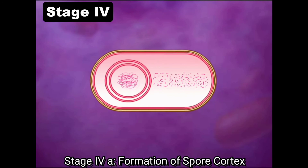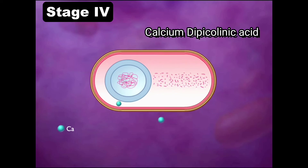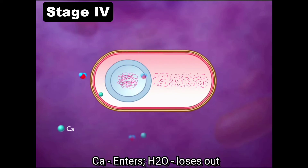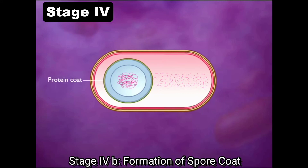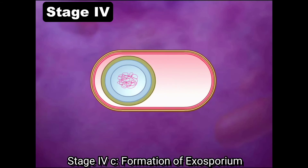In stage four, the peptidoglycan is laid between the two membranes of the developing spore to form the spore cortex. The calcium dipicolinic acid is formed inside the developing spore, where calcium enters from the outside and in exchange it loses water. Once the protein coat is formed over the cortex, the spore gets matured. Some spores form an additional layer called the exosporium.